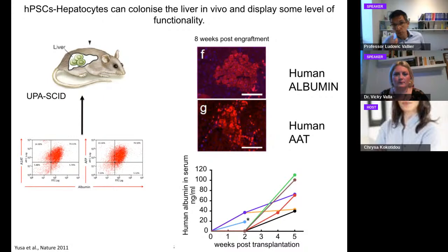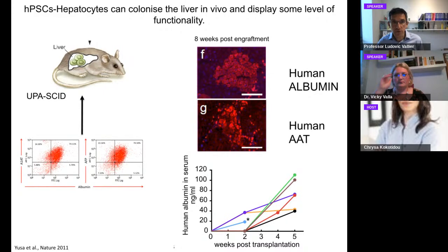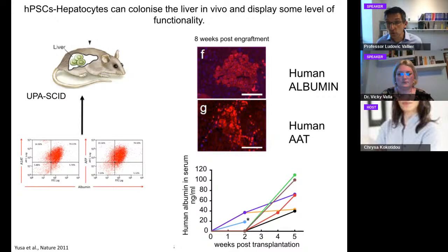These cells can already be used for several applications. We showed they can be transplanted in vivo into a mouse liver — using animal models of acute liver failure where hepatocytes die from a toxic transgene. We transplant our in vitro generated cells, and we observe nice nodules of human hepatocytes in the mouse liver expressing human albumin and human alpha-1 antitrypsin. We can detect these proteins in the serum of the mice, showing the transplanted cells are functional. This really demonstrates these cells could be used for cell-based therapy.